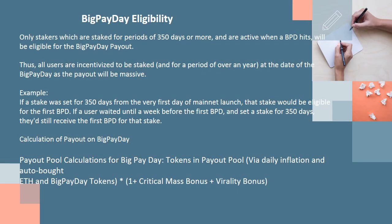Big payday eligibility: Only stakers which are staked for periods of 350 days or more, and are active when a big payday hits, will be eligible for the big payday payout. Thus, all users are incentivized to be staked for a period of over a year. Example: If a stake was set for 350 days from the very first day of mainnet launch, that stake would be eligible for the first big payday. If a user waited until a week before the first big payday and set a stake for 350 days, they'd still receive the first big payday for that stake.